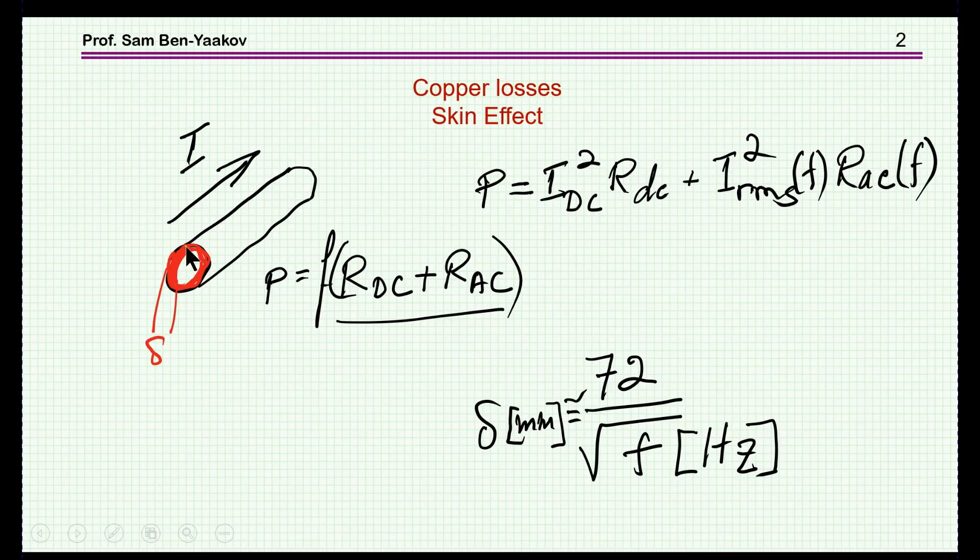This means that the charge carriers are being pushed into the outer rim of the wire. The charge carriers are located at this thickness of delta, which can be expressed approximately for copper at 25 degrees as 72 divided by square root of frequency in hertz, and delta will be in millimeters.